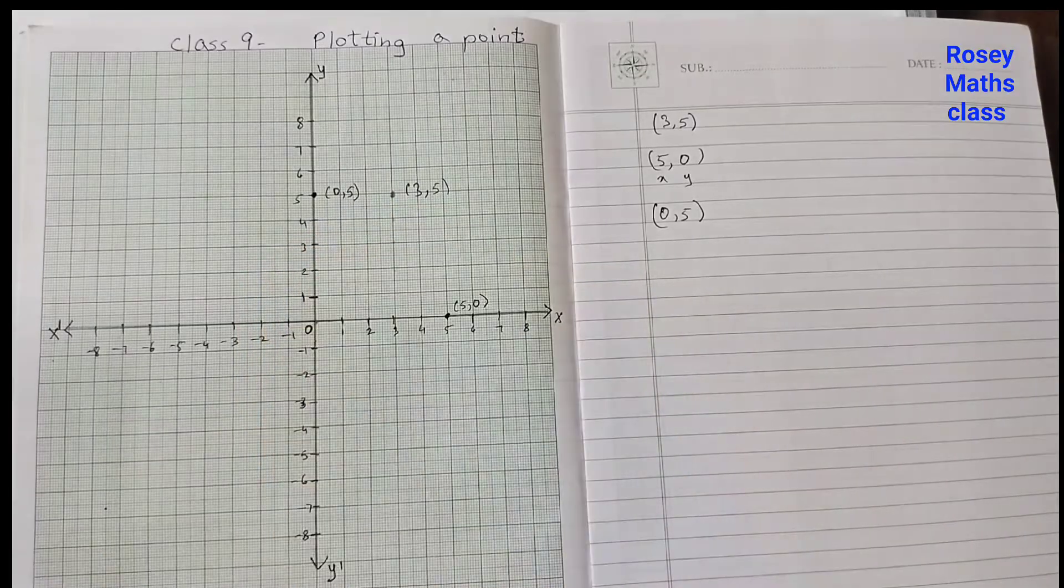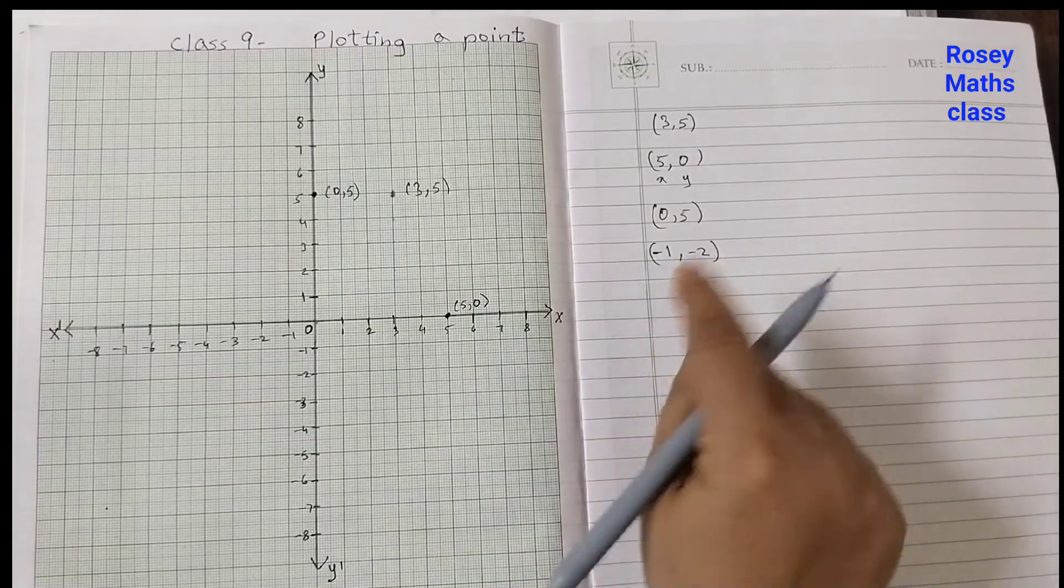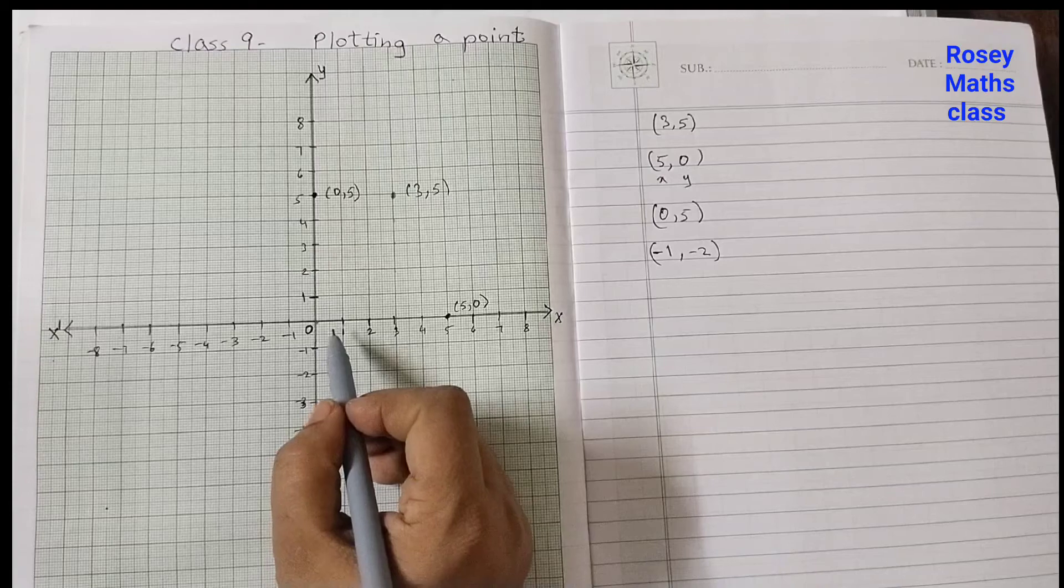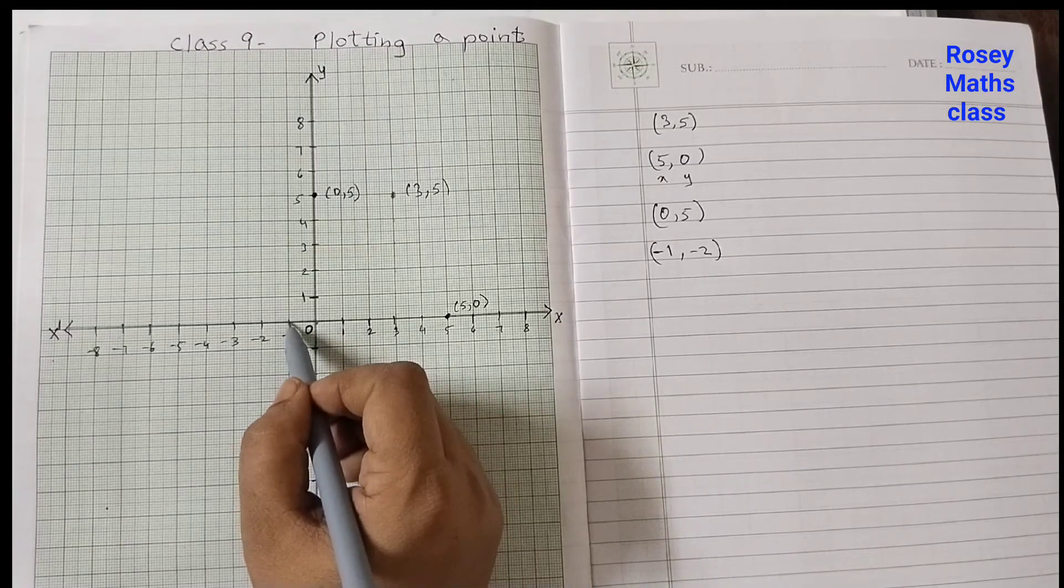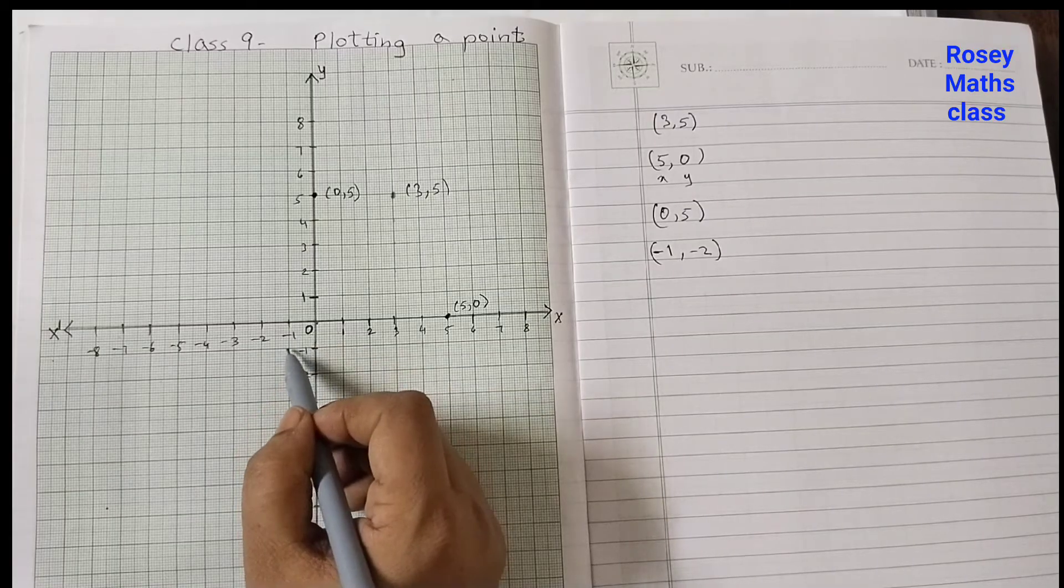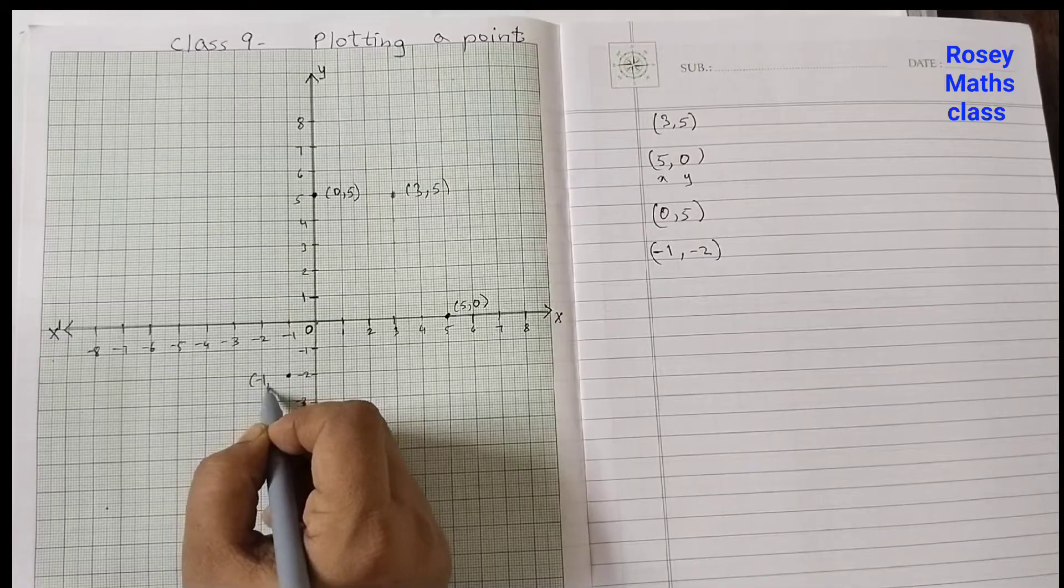Minus one, minus two. So now we will move to the left because that's a negative number. So zero, minus one, and then two units down: one, two.